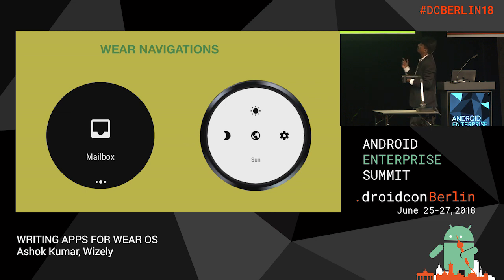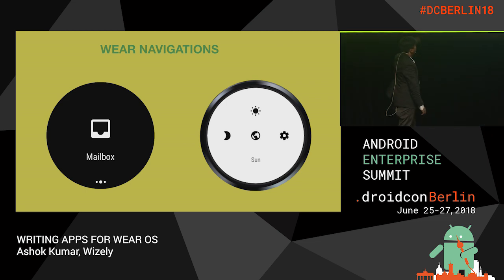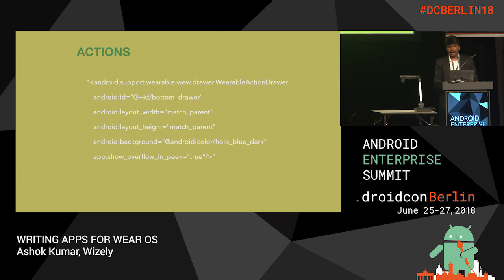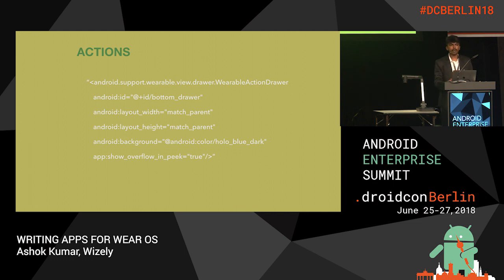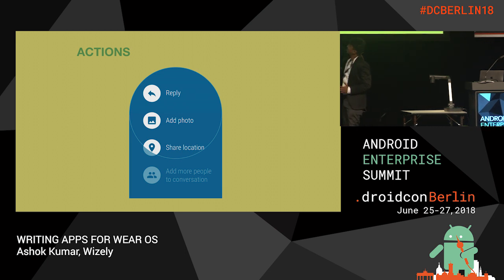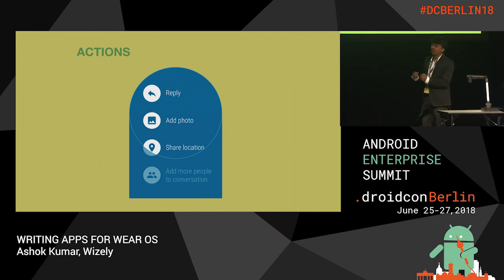If you are using wearable navigation, the navigation drawer looks like this for a multi-page drawer. For a single-page navigation drawer, all menu items appear on the same page. Actions is another component that enables you to quickly respond to a particular action — for example, when you receive a message, you get an action sheet to reply quickly, reply with text, add a photo, or share your location.